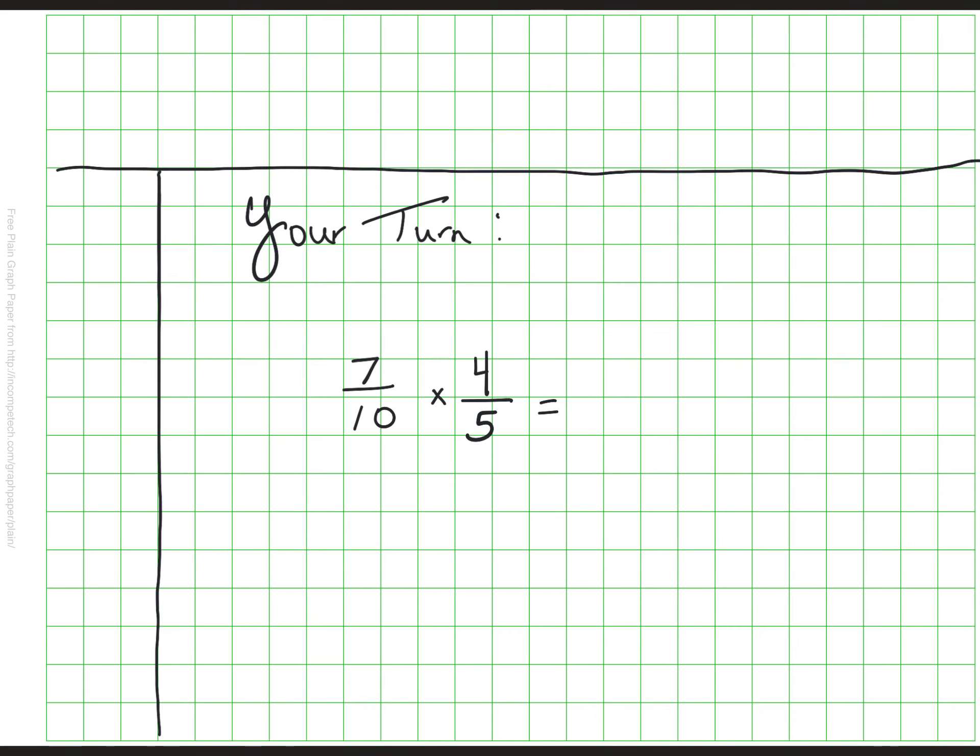So I'll leave you here with one for your turn. Go ahead and use the algorithm to multiply seven-tenths times four-fifths. Find out what seven-tenths of four-fifths would be. You can use the algorithm and you can always use the model to help you confirm your answer.